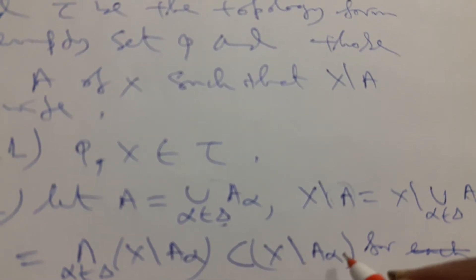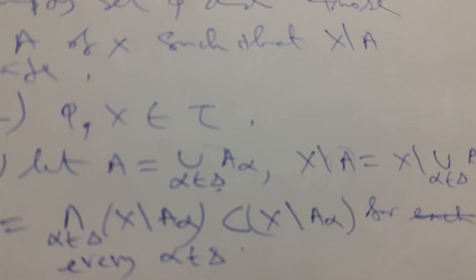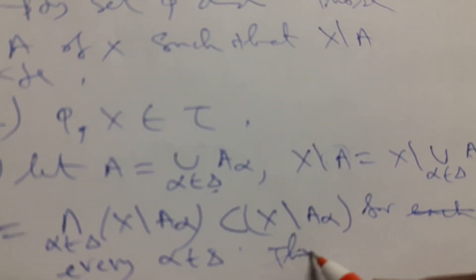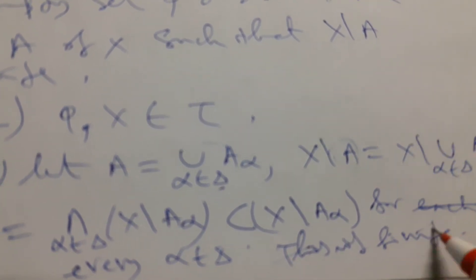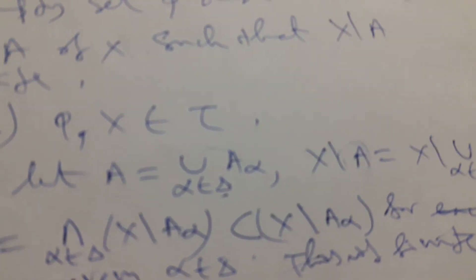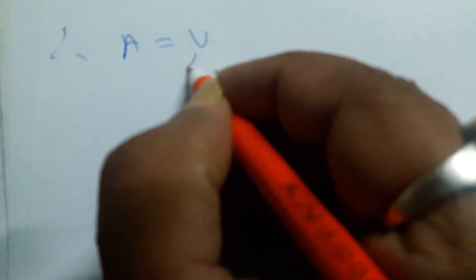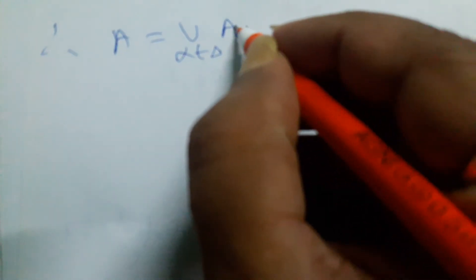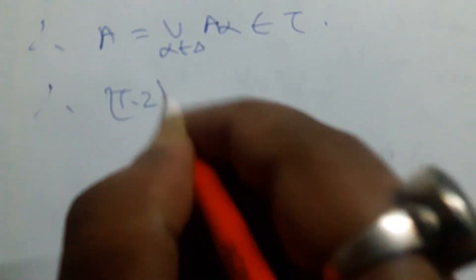This quantity is finite, so therefore A equal union of α belongs to Δ of A_α is included in τ. Therefore T2 is satisfied.